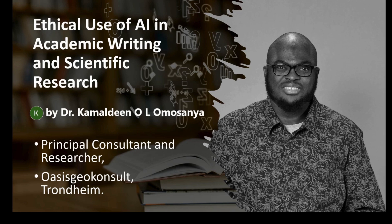Especially in scientific writing and publication. We all know that AI models like ChatGPT, Grammarly, and citation generators are now being used by a lot of students and researchers worldwide. While these tools are very fast and boosting our productivity, they also come with a number of ethical concerns around things like plagiarism, authorship, transparency, and scientific integrity.